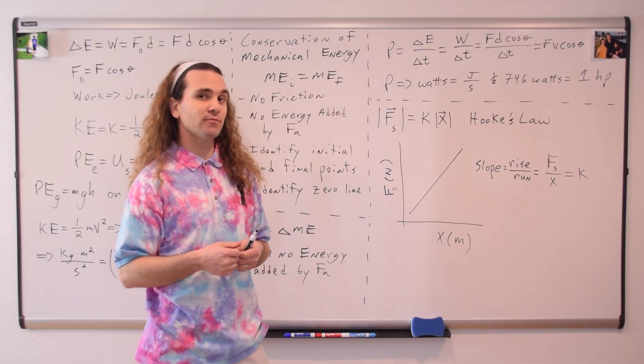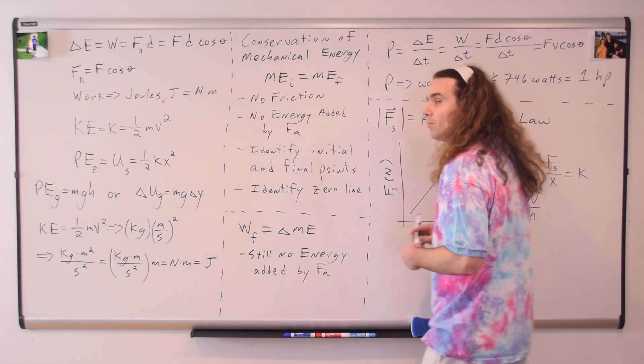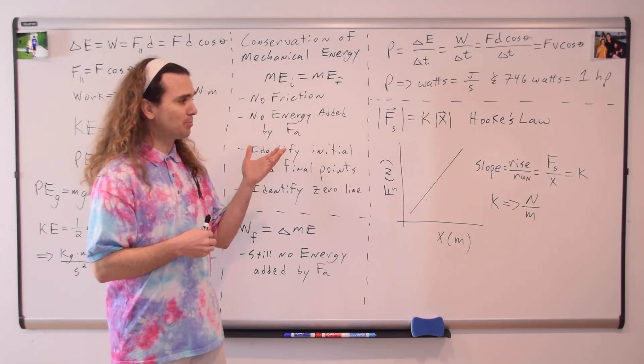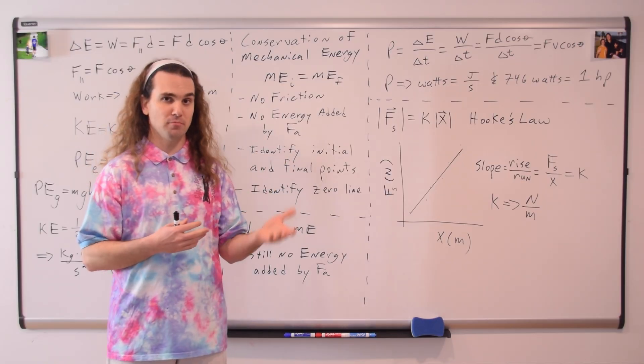Which brings us to typical dimensions for the spring constant. The spring constant is in force per unit length, therefore, newtons per meter.